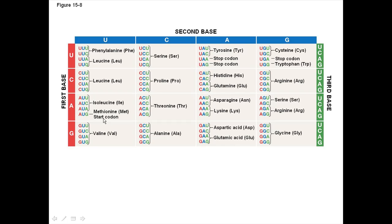If there's a start codon, you might deduce that there are also stop codons. There are three different stop codons: UAA, UAG, and UGA. Whenever a cell runs across any of these, they all tell the cell this is where the protein ends — this is where you should stop doing translation. The bottom line is that someone has figured out what each of the 64 codons encodes for in terms of what amino acid it encodes for.